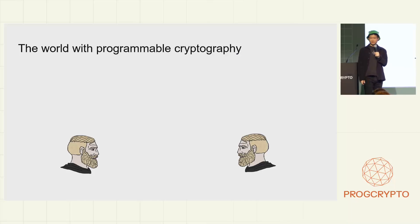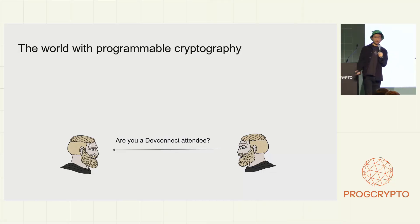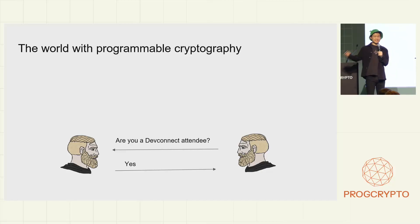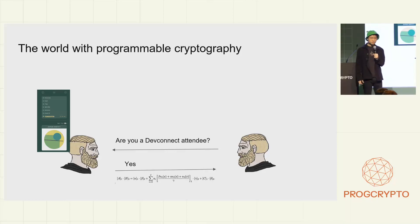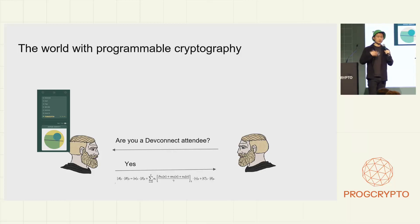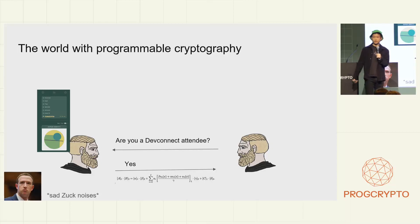Now I want to talk about what the world looks like with programmable cryptography — it's a lot simpler and a lot more privacy-preserving and modular. Let's say the party on the right asks, 'Are you a DevConnect attendee?' The party on the left is just going to say yes and send that back. To do this, they'll incur a little cryptographic overhead — they'll pass some cryptographic artifact along with their yes response, so the querier can verify it's a well-formed, correct response. This basically works, and that overhead enables communication to happen in a much more direct way.